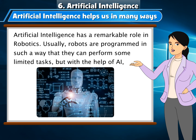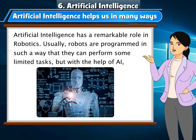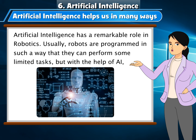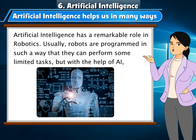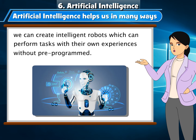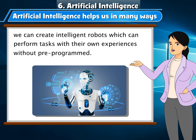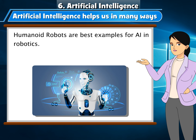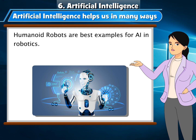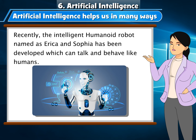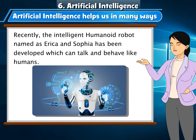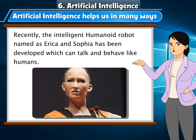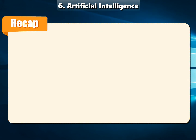Artificial Intelligence in Robotics: Artificial Intelligence has a remarkable role in robotics. Usually, robots are programmed to perform some limited tasks, but with the help of AI we can create intelligent robots which can perform tasks based on their own experiences without being pre-programmed. Humanoid robots are the best examples of AI in robotics. Recently, the intelligent humanoid robots named Erica and Sophia have been developed, which can talk and behave like humans.